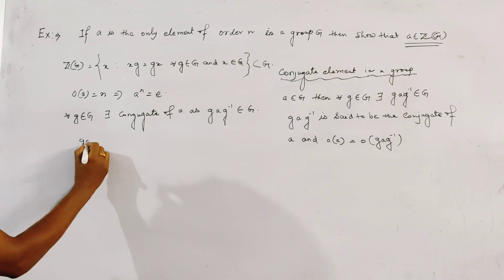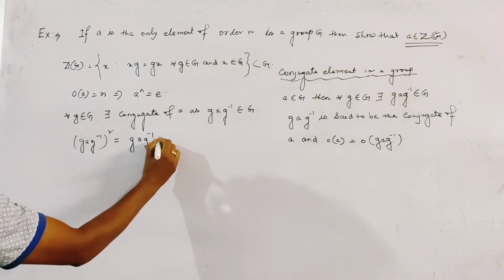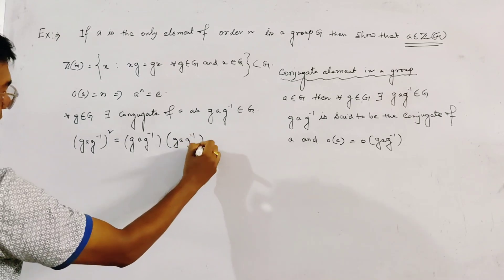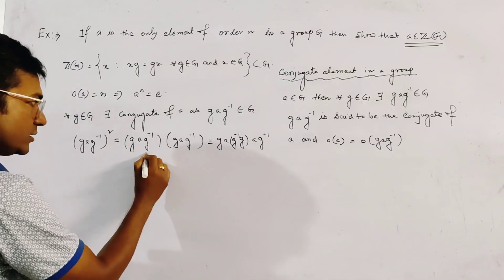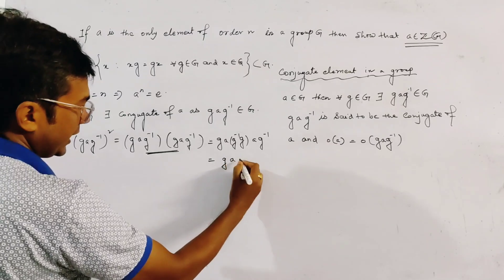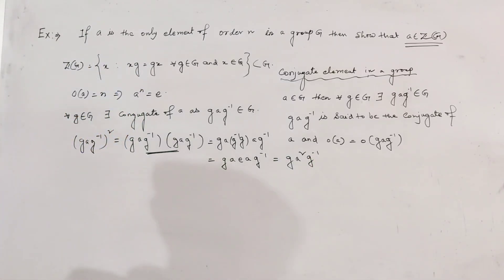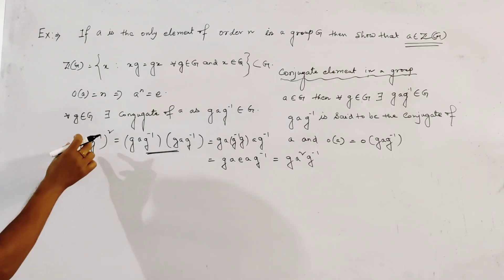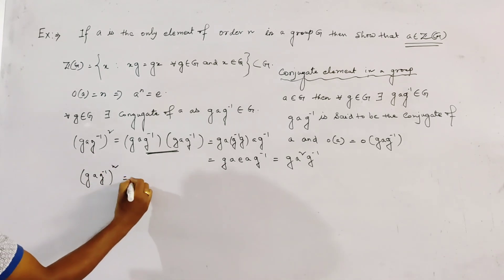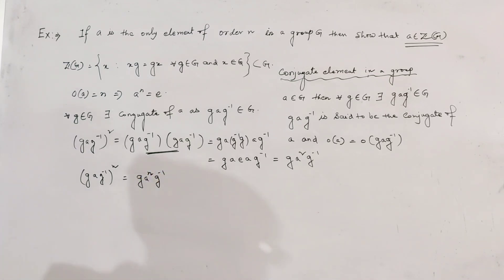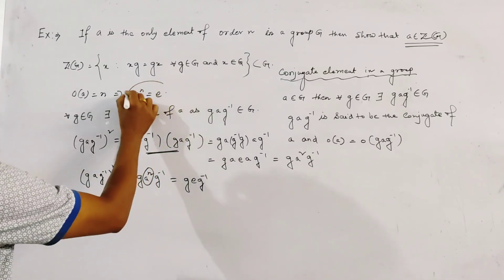Now consider (g·a·g⁻¹)². This equals g·a·g⁻¹ · g·a·g⁻¹, and by the associative property this simplifies to g·a²·g⁻¹. By repeating this process, we get the general result: (g·a·g⁻¹)ⁿ = g·aⁿ·g⁻¹. Since aⁿ = e, this becomes g·e·g⁻¹.